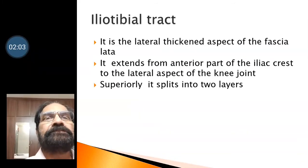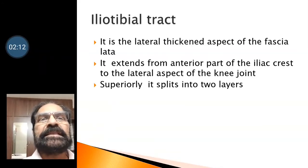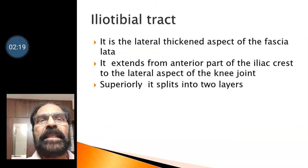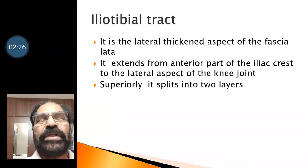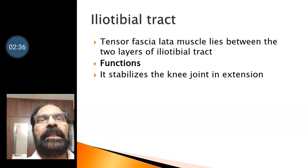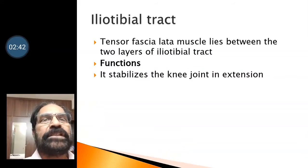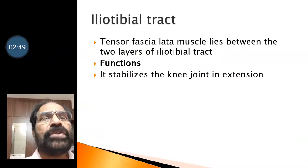There is one more thickening of the fascia lata called the iliotibial tract. The iliotibial tract is a thickened lateral aspect of fascia lata. It extends from the iliac crest, that is the anterior part of the iliac crest, to the lateral side of the knee joint. This iliotibial tract splits into two layers superiorly, and the tensor fasciae latae muscle lies between the two layers of the split iliotibial tract. The function of the iliotibial tract is to stabilize the knee joint in extension.